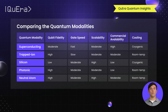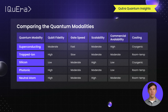Silicon quantum computing holds great potential for integration with existing technologies, though it's still in the research phase. Photonic quantum computing is ideal for quantum communication and operates at room temperature, but is challenging to scale. Neutral atom quantum computing promises scalability with simpler cooling requirements, but trades off some speed.